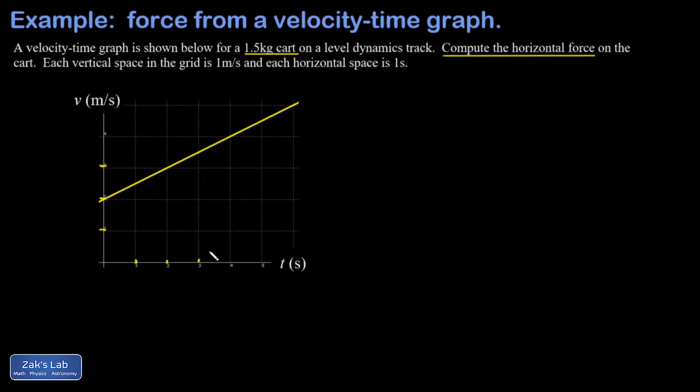And the key to this problem is to realize that with a tilted velocity-time graph I can quickly find the acceleration of this cart, and that should be a constant number because the slope of this graph is constant. Then I'm going to use Newton's second law, given the mass and the acceleration, to find the force on this cart.